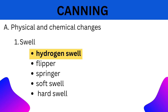1. Hydrogen Swell: This type of bulging is due to the hydrogen gases produced by the action of food acids on the metal of cans. The bulging ranges from flipping to the hard core. The food remains free from harmful microorganisms and is fit for consumption.